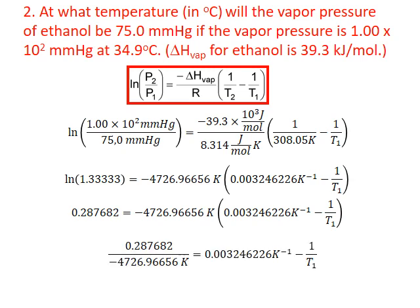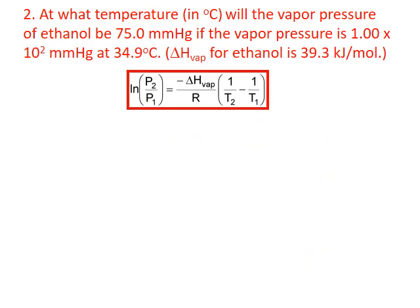We start simplifying by dividing both sides by negative 4726.96656, which leaves on the right-hand side just the expression in parentheses. On the left-hand side we have 0.287682 divided by negative 4726.96656, which simplifies to negative 0.00006086 kelvin to the negative 1. Now we want to get T1, our unknown, all by itself on one side.